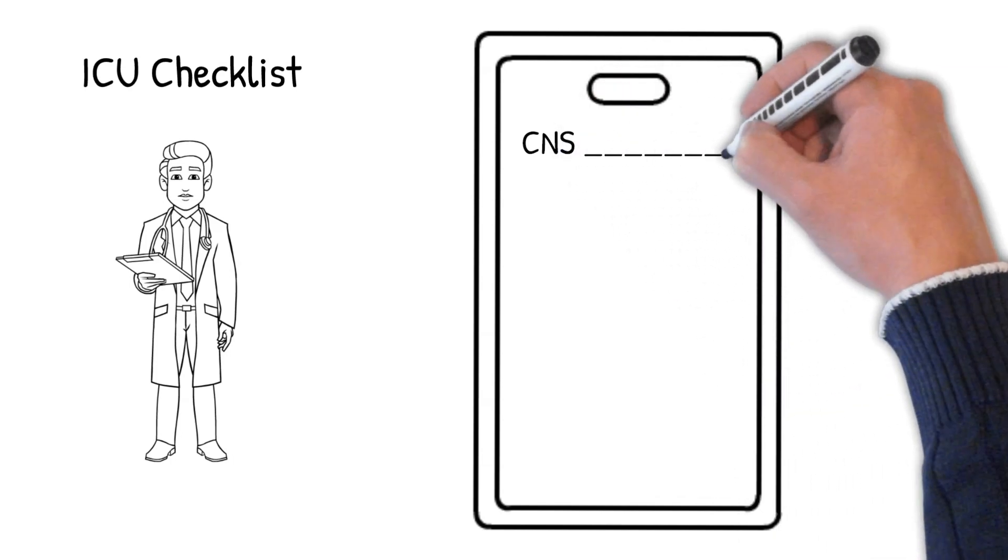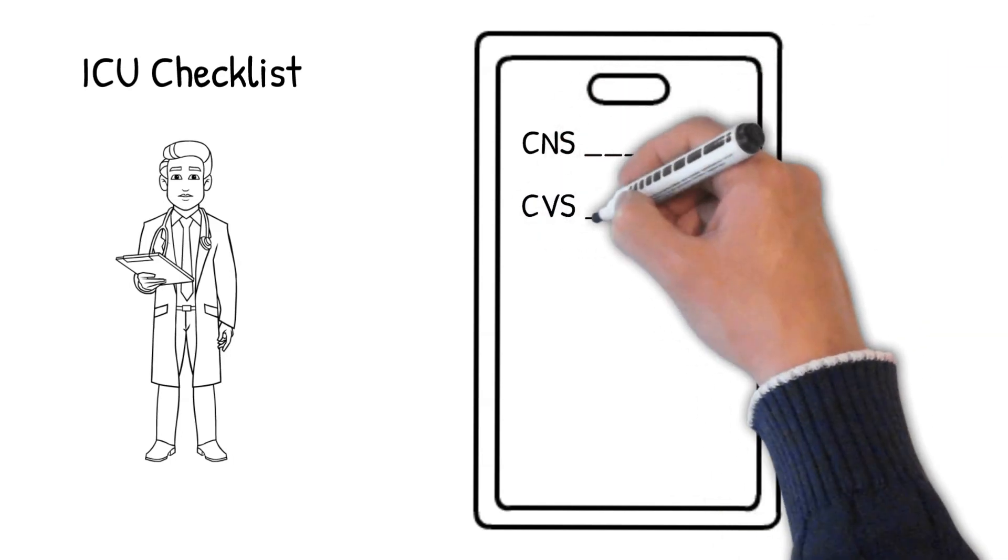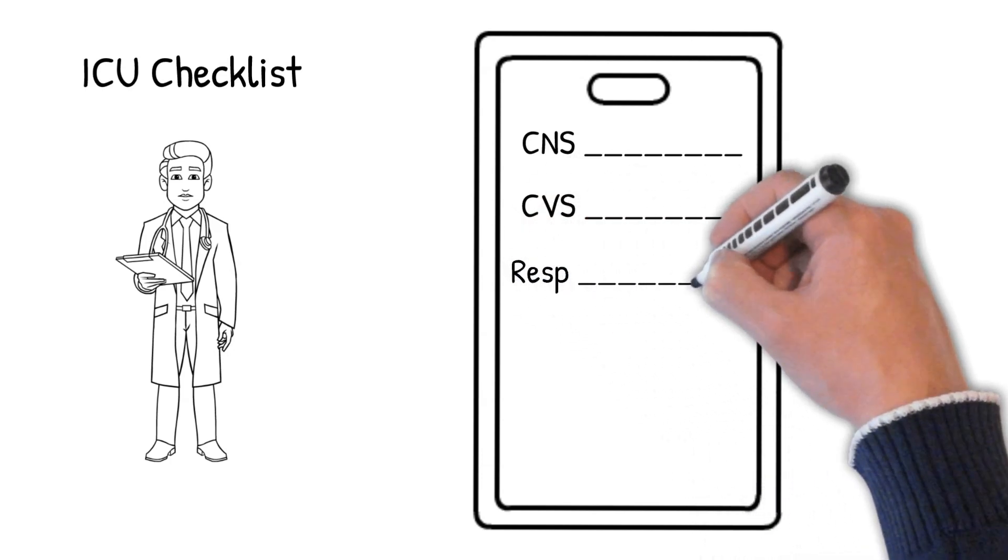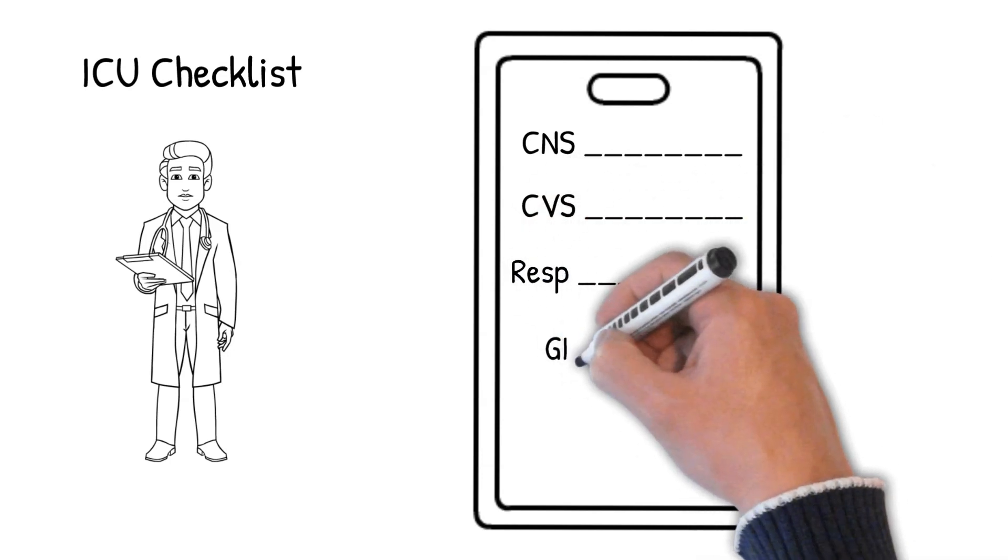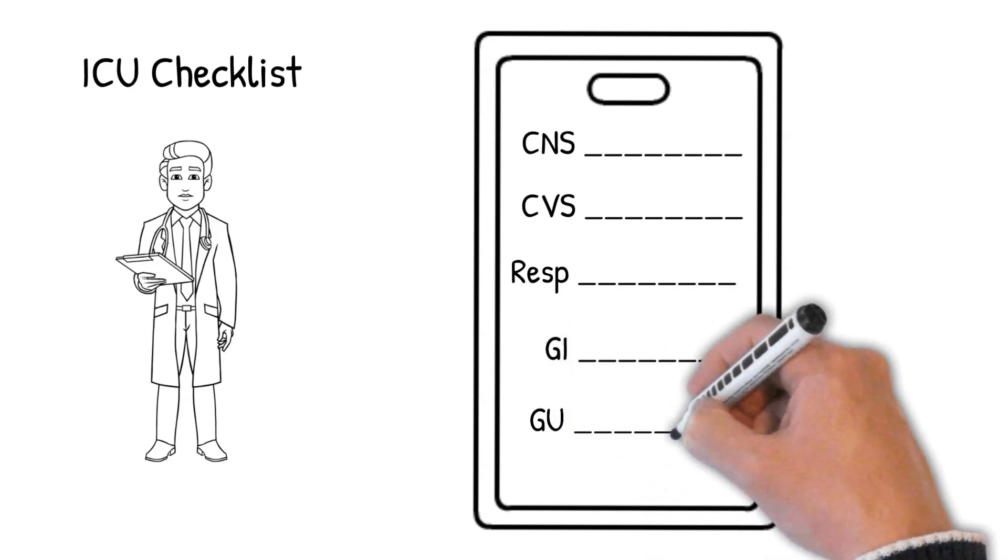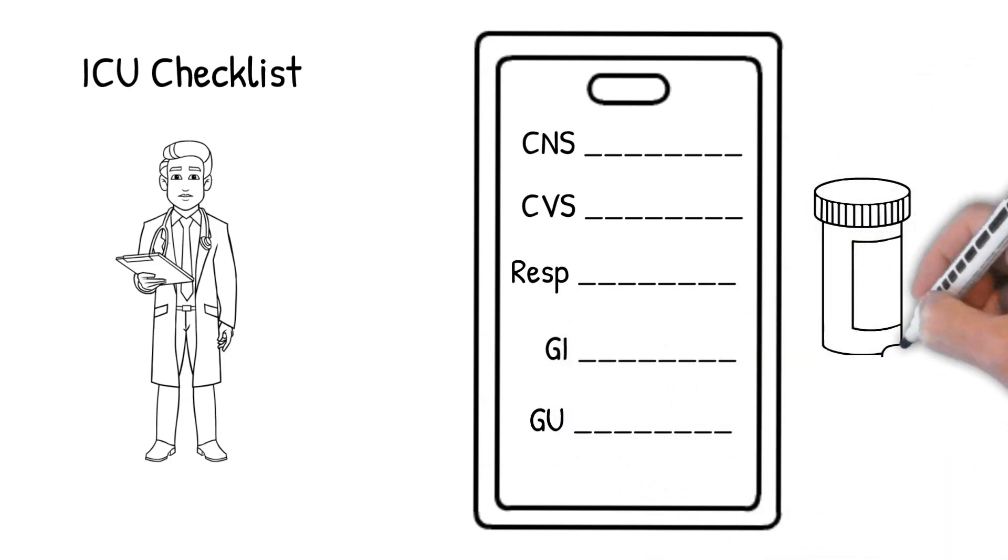CNS central nervous system, CVS cardiovascular system, respiratory system, GI and GU, and of course you will go over the medications on a daily basis.